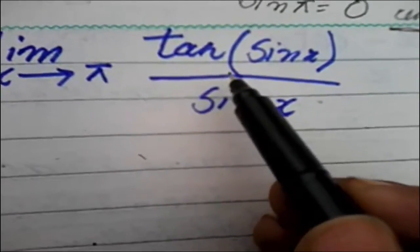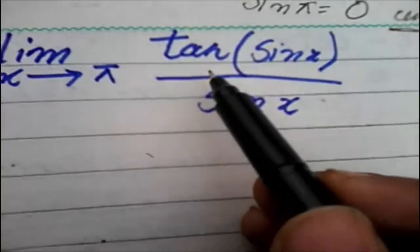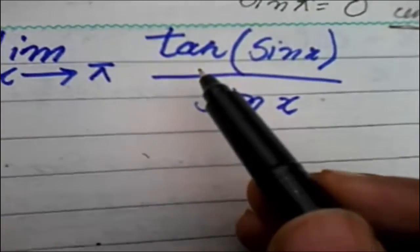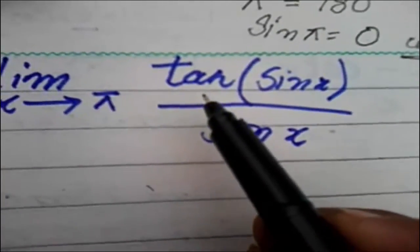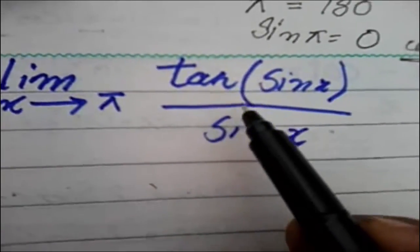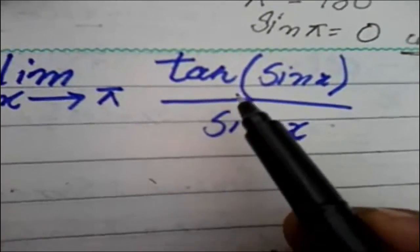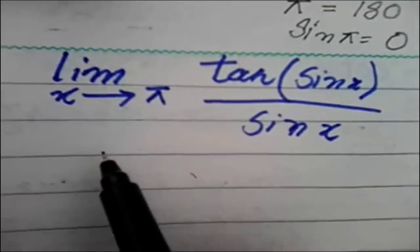So what we do? Undefined, this limit is undefined? No, no, no. Here is another method. We use trigonometric function or identity. We can simplify this function and find the exact value. Let's see, I will show you how we can do this.